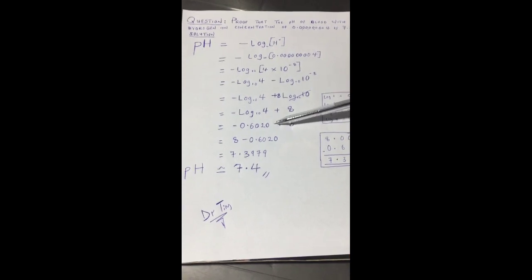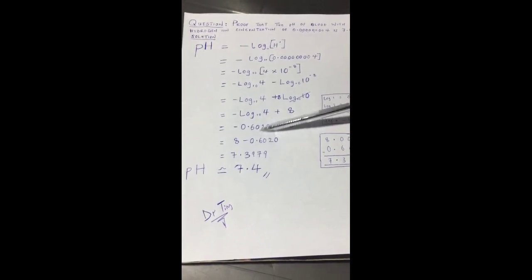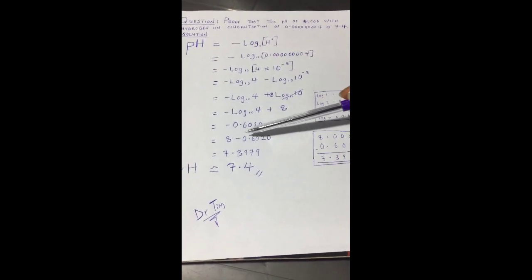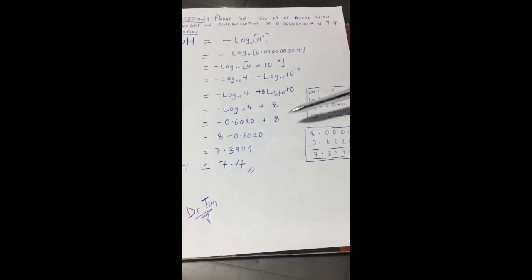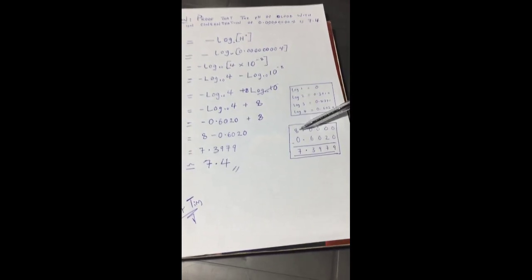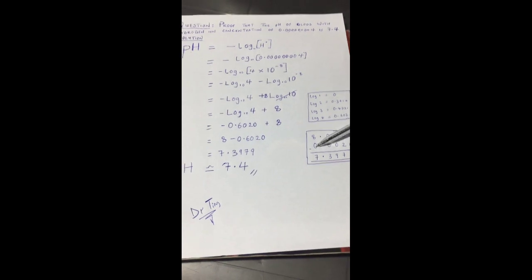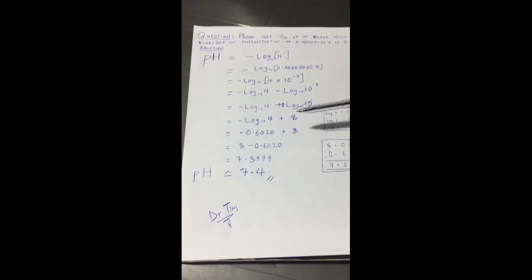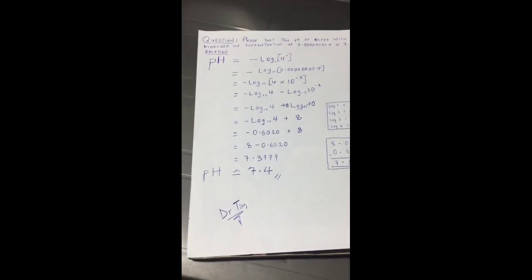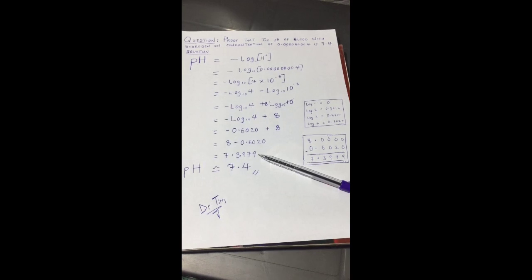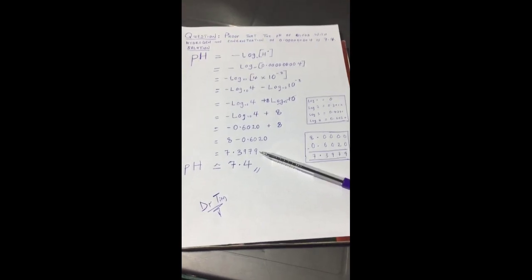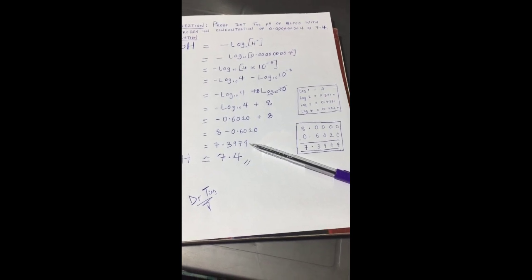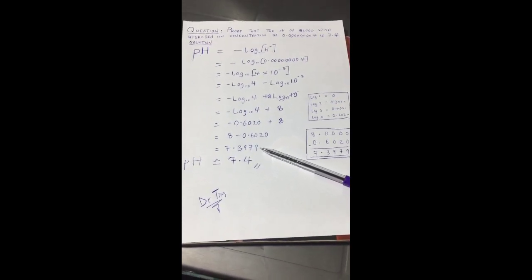When you add it to 8, basically I'm just switching their positions. When you do 8 minus 0.6020, the answer you get is 7.3979, approximately 7.4. So there you go, you've proven that the pH of blood with hydrogen ion concentration 0.00000004 is 7.4. Thank you.